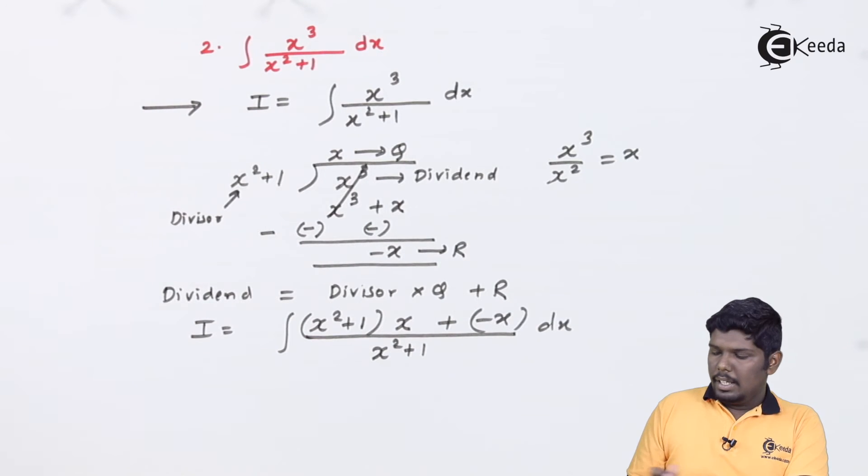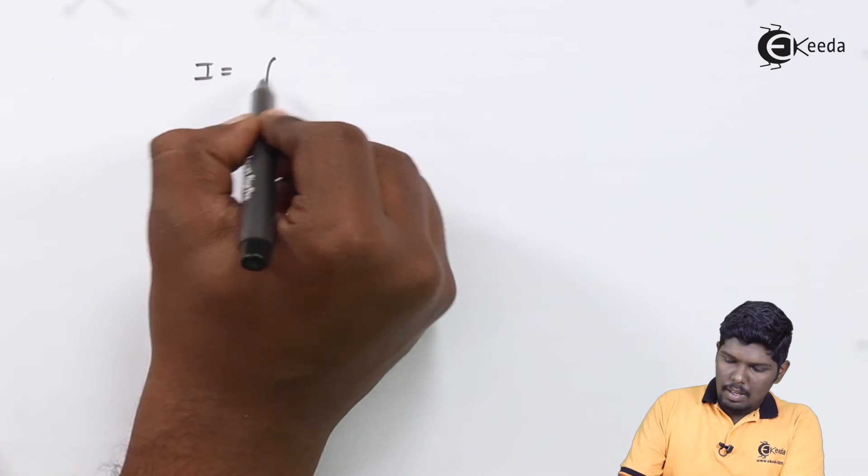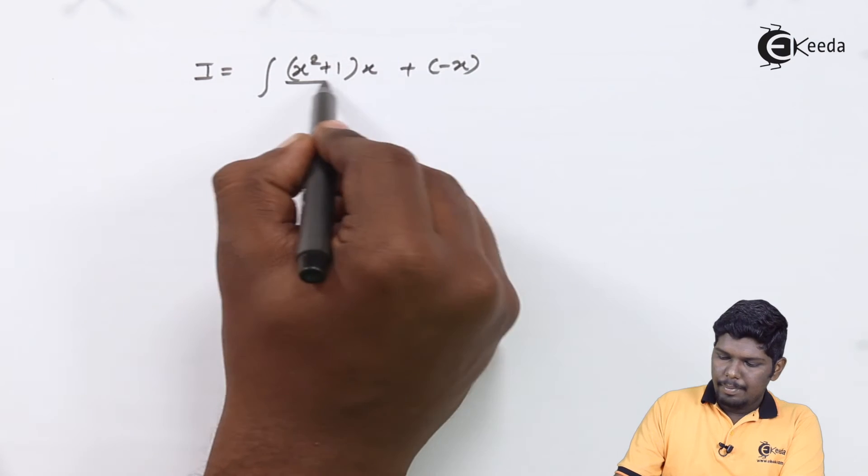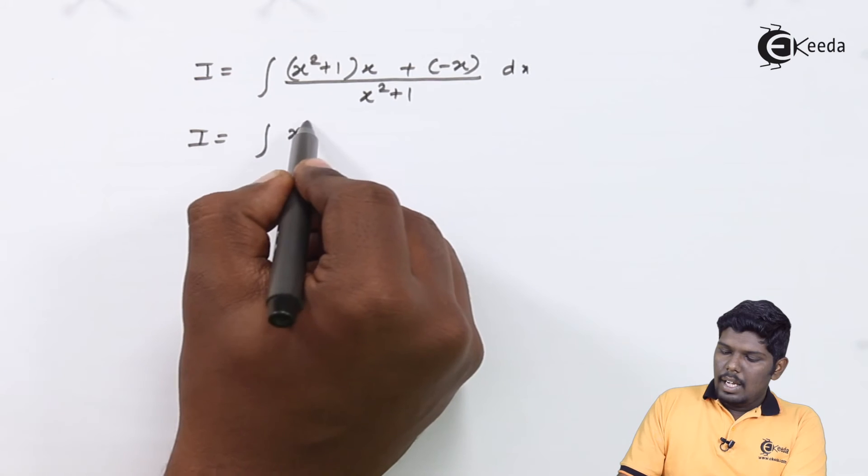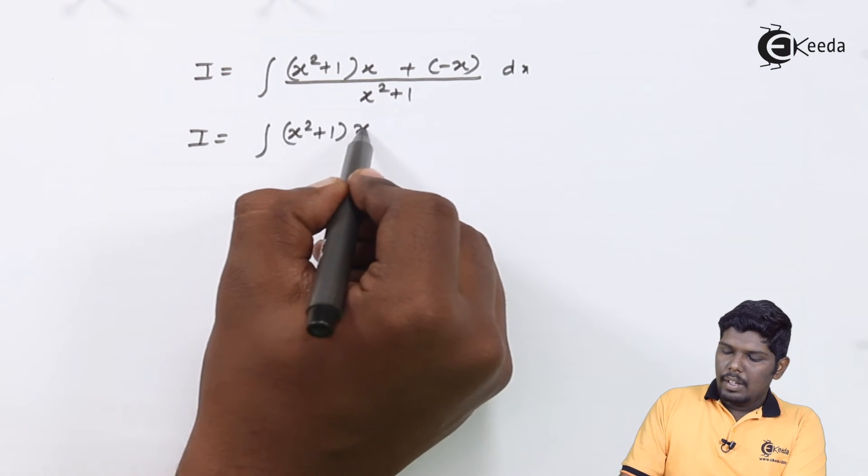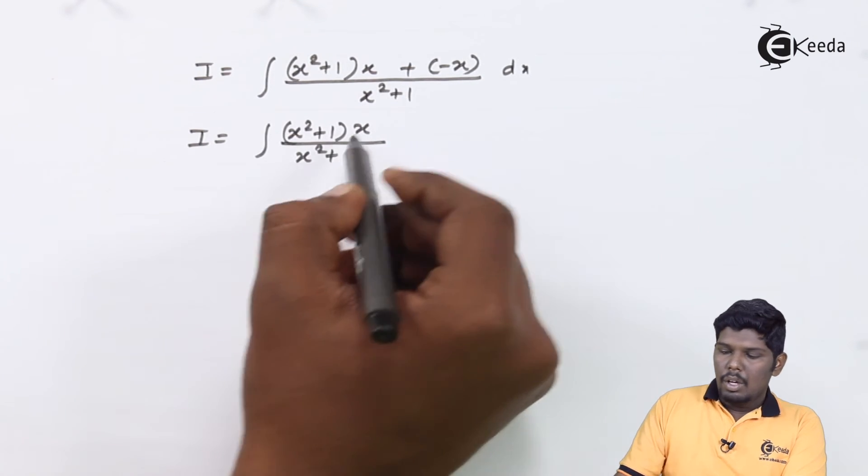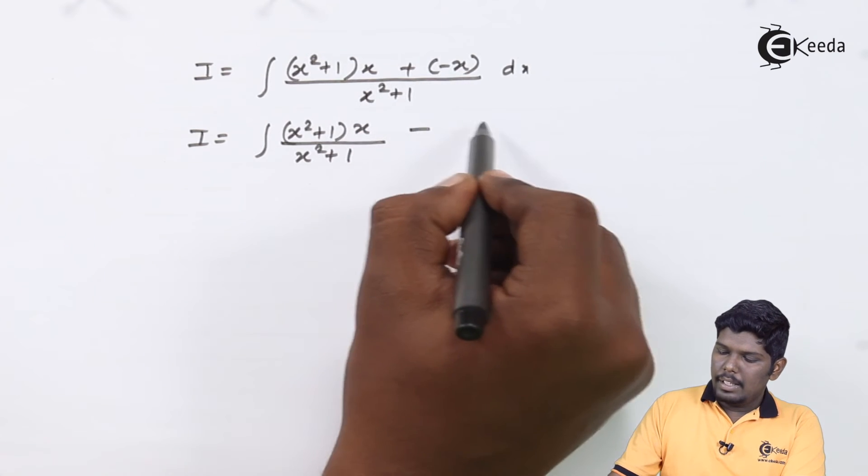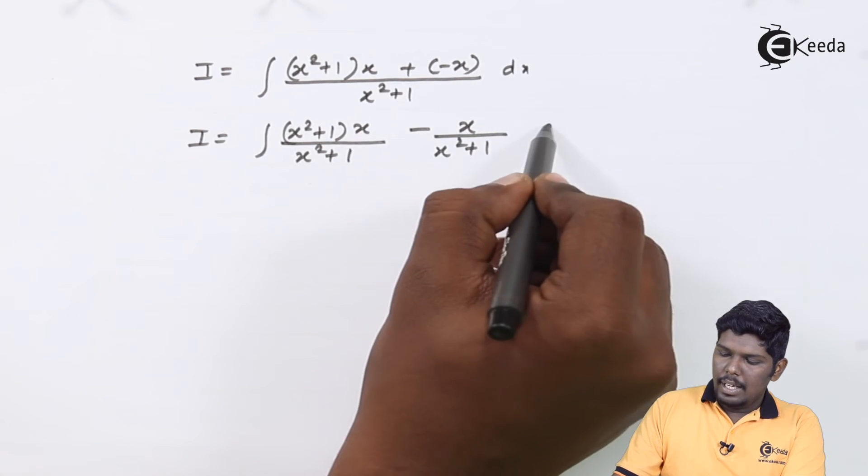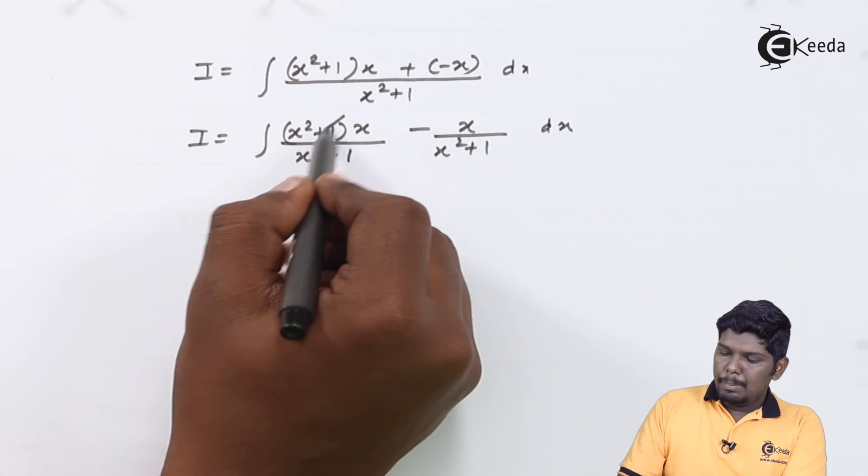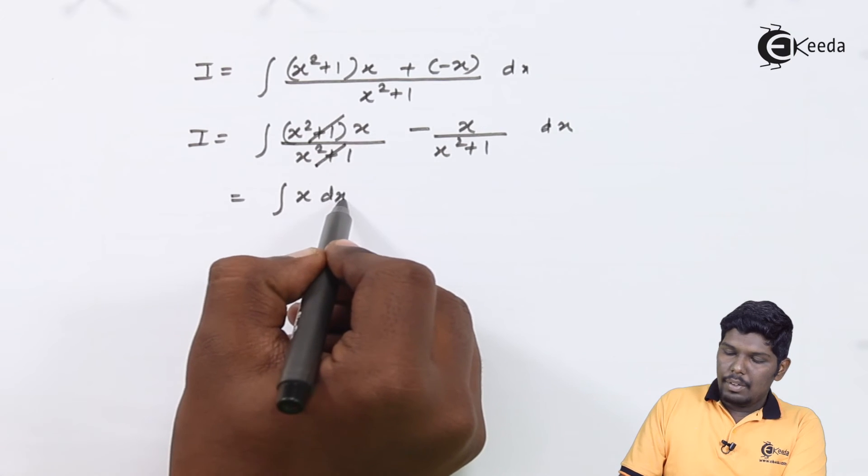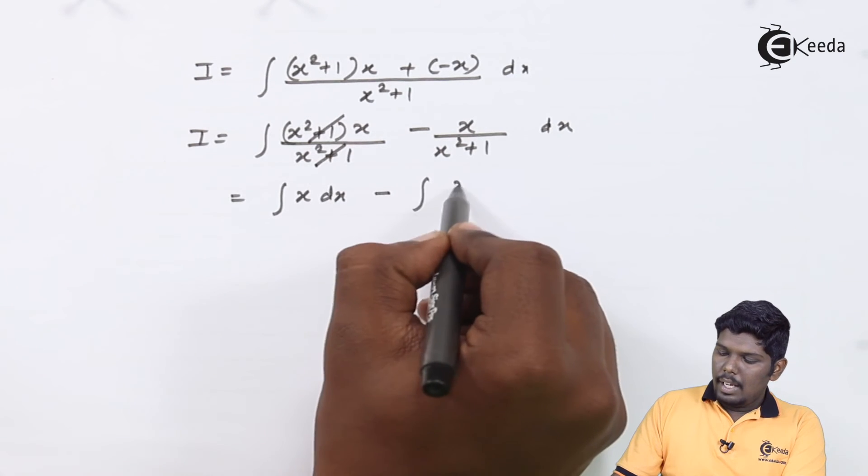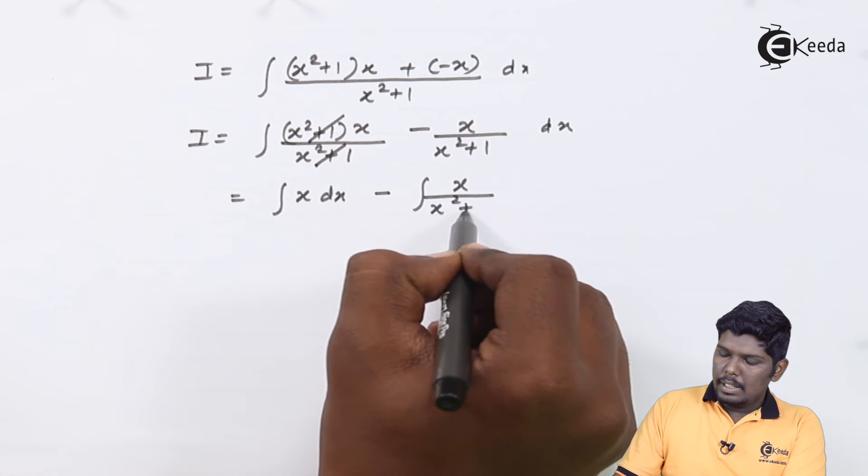The next step will be separating the denominator. That will give you integral (x²+1)x/(x²+1) plus into minus is minus x/(x²+1) dx. From the first part, x²+1 will be cancelled and we have integral x dx left. And from the second part, we have x/(x²+1) dx.